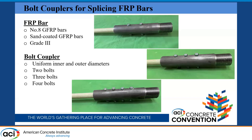Three bolt coupler specimens are proposed, considering two bolts, three bolts, and four bolts. All these specimens show only half of the specimen, not the full one, so the number of bolts will be doubled. The threaded part visible at the end of the couplers is part of the test setup, not part of the coupler itself.